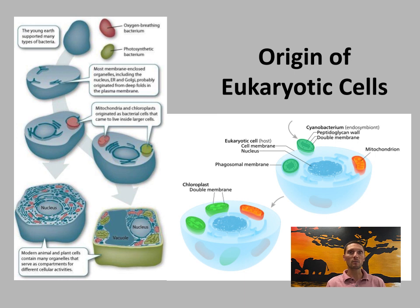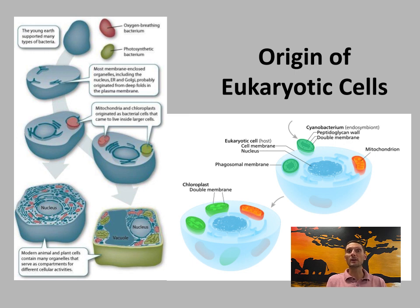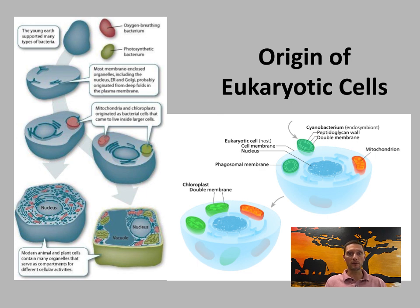The organism engulfed was not killed; the two lived in harmony. A larger cell engulfing a smaller one found it beneficial to keep it alive. This is best exemplified by mitochondria. If a larger cell engulfed a free-living prokaryote resembling a modern-day mitochondria, rather than digesting it, it allowed it to live, providing a continual source of energy — giving that cell a better chance of survival, which would be favored by natural selection.